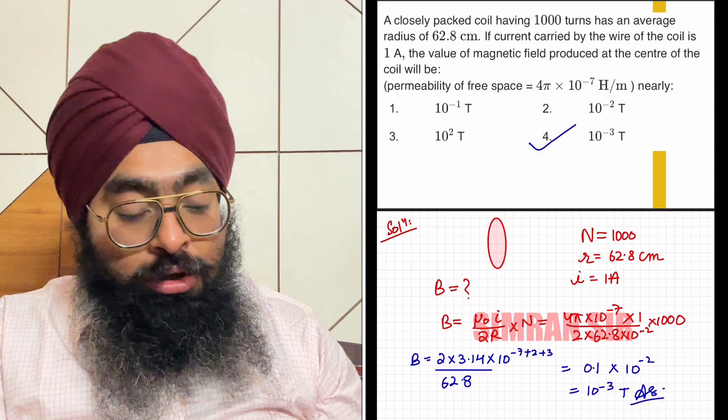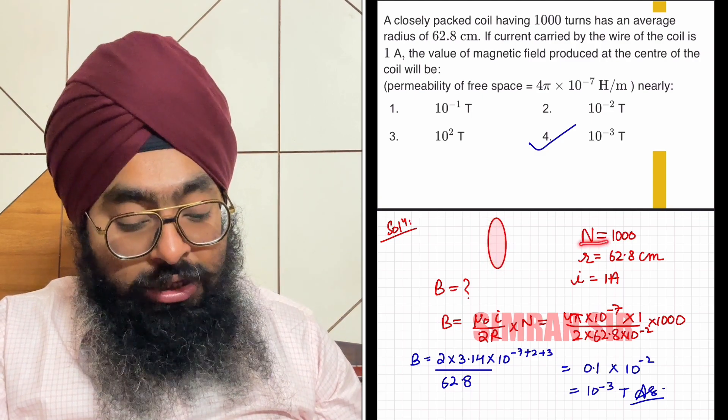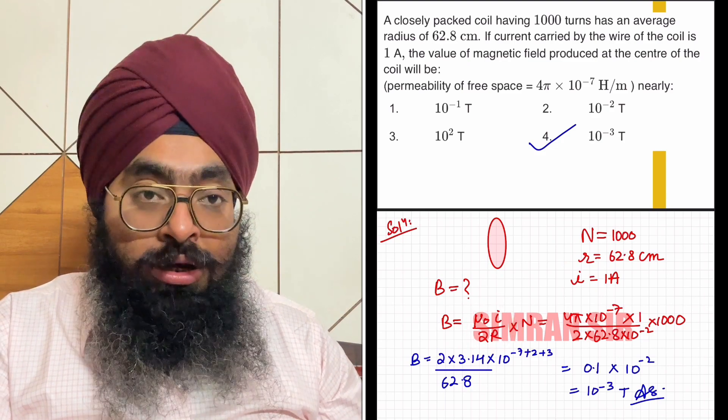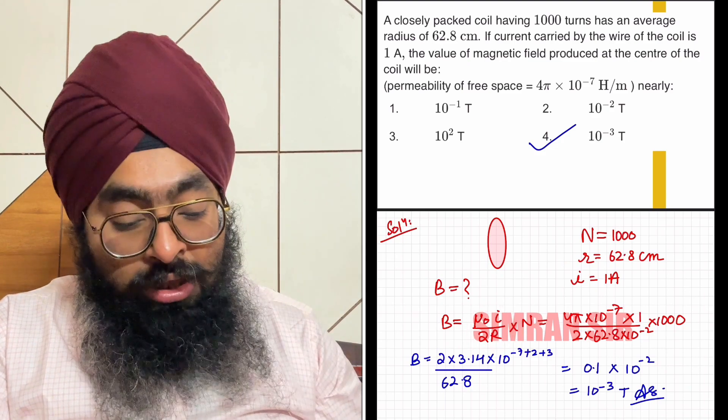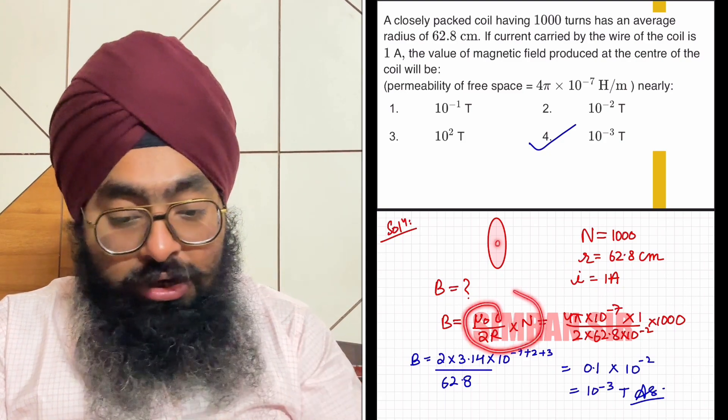For a coil in which current is moving and which has N turns, the magnetic field produced is μ₀I/2R. This is for one turn, and for N turns we multiply by N. So this is the magnetic field at the center of a current carrying coil or circular loop.